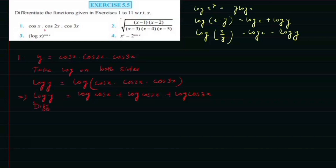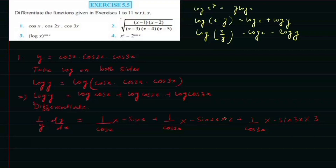Now we differentiate this function with respect to x. Differentiating log y gives 1/y · dy/dx. Derivative of log cos x is (1/cos x)·(−sin x); for log cos 2x it is (1/cos 2x)·(−sin 2x)·2 by chain rule; and for log cos 3x it is (1/cos 3x)·(−sin 3x)·3. Simplifying sin/cos = tan, so 1/y · dy/dx = −tan x − 2 tan 2x − 3 tan 3x.